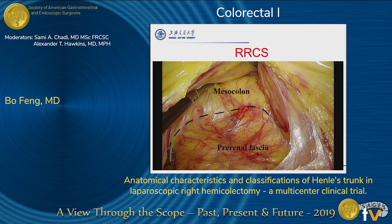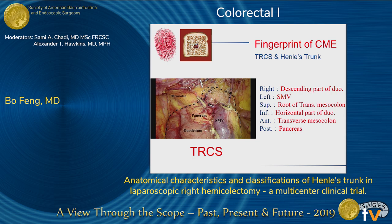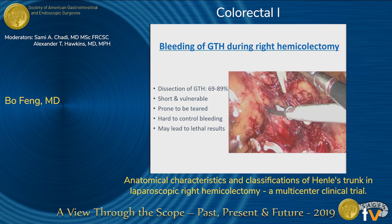Regarding the RRCS, it is very straightforward — we just need to separate the mesocolon apart from the Gerota fascia and we'll find the proper RRCS. Regarding the TRCS, our group thinks it might be the fingerprint of the CME procedure. The right border is the descending part of the duodenum, the left side is the SMV, the superior part is the root of the transverse mesocolon, and the inferior part is the horizontal part of the duodenum. The anterior wall is the transverse mesocolon and the posterior wall is the pancreas.